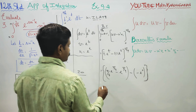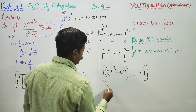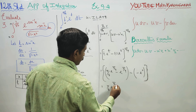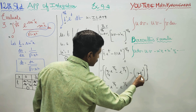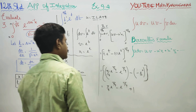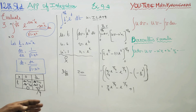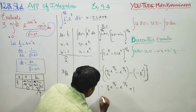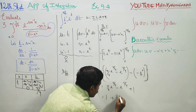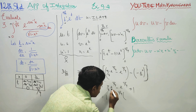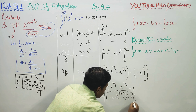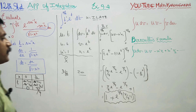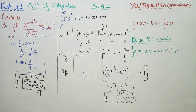After simplification: π/4 · e^(π/4) - e^(π/4) - (0 - 1) = π/4 · e^(π/4) - e^(π/4) + 1. Taking e^(π/4) as common: e^(π/4)(π/4 - 1) + 1. This is your final answer: 1 + e^(π/4) · (π/4 - 1). Thank you.